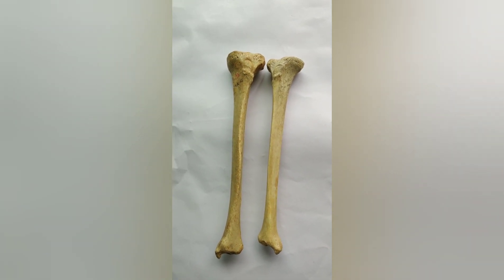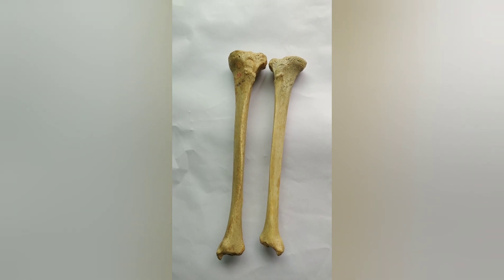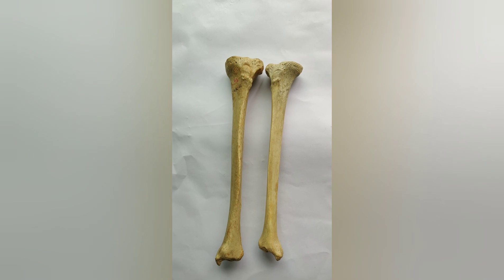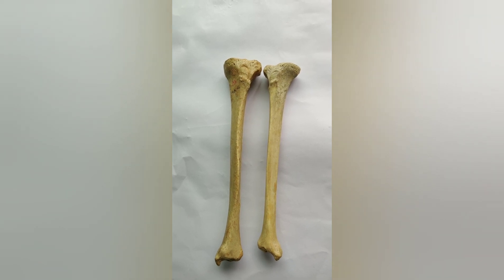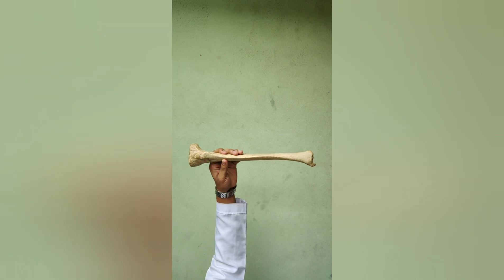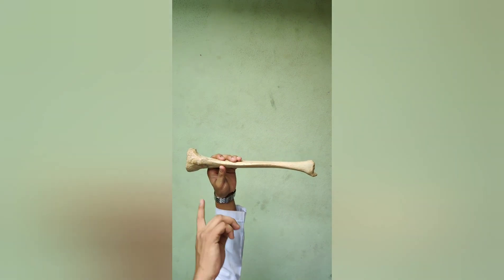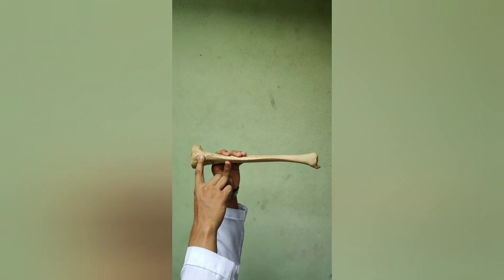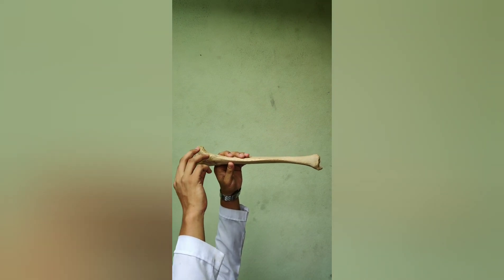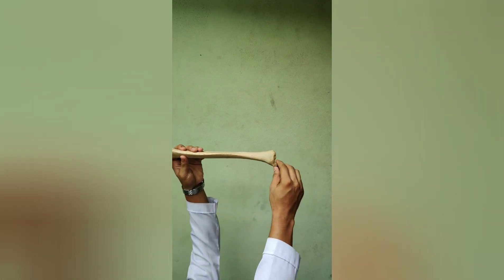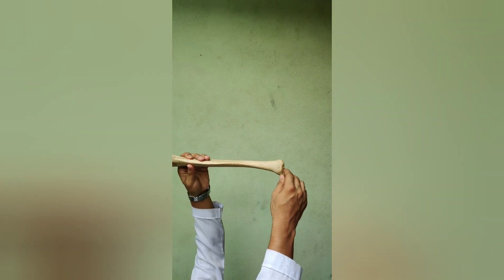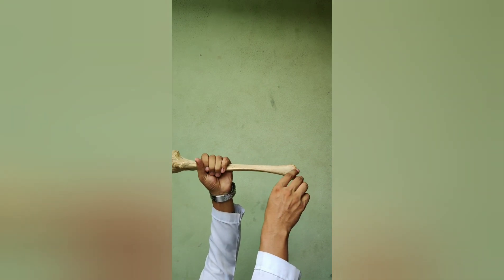The tibia articulates with the femur to form the knee joint. To hold this bone in anatomical position we have to determine the side. Side determination is very important in long bones. For side determination you have to know two things: the tibial tuberosity, which lies entirely in the upper end of the bone, and the medial malleolus, which lies medially in the lower end.